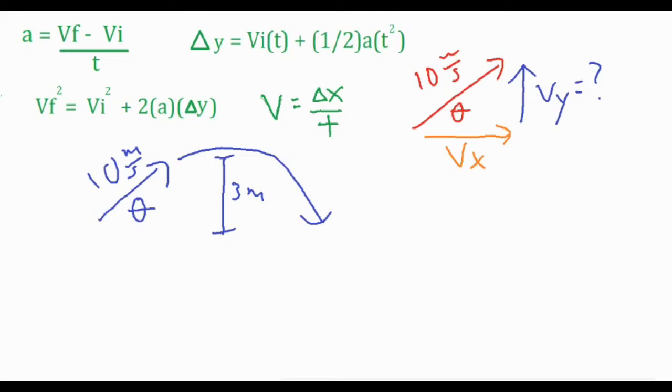So normally we would split up an x and y column. It looks like we don't really need to do that for this particular one. So we have a delta y of 3 meters and an acceleration of negative 9.8 meters per second squared, as usual.